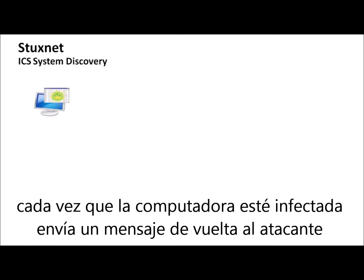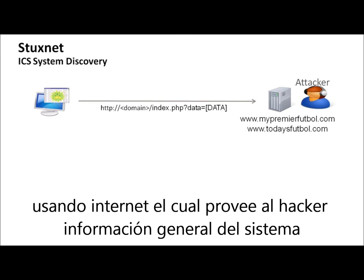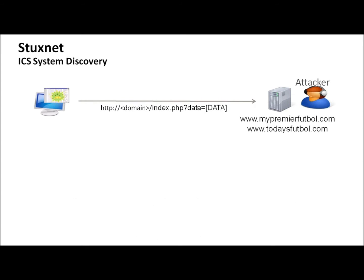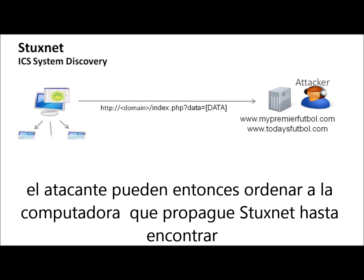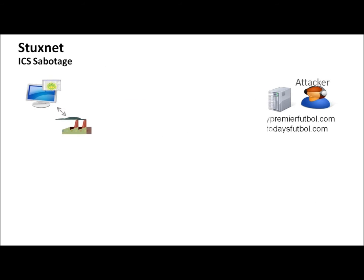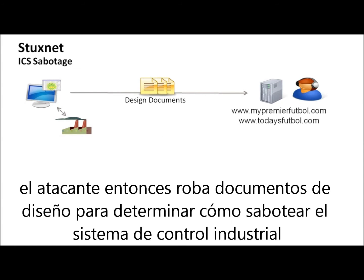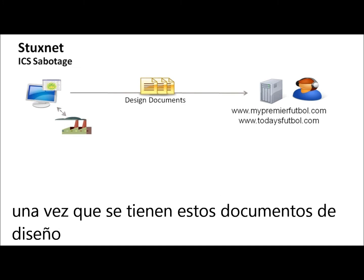Every time a computer is infected, it sends a message back to the attacker over the internet, which provides the attacker with general system information. The attacker can then tell the computer to spread Stuxnet further until it finds a computer that is able to program the targeted PLC.